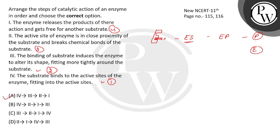The correct order is: first, second, third, fourth — Option A is correct. The incorrect option would be any other arrangement. The correct option is Option A. This information is from NCERT Class 11, pages 115 and 116. Thank you.